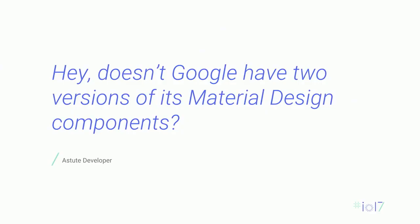You might be asking yourself, doesn't Google have multiple implementations of its UI library? It's true — we actually have more than two versions. We have one in Polymer and Web Components, one in Angular, Material Design Light, Material Components, and a few internal implementations. When we started Material Design three-plus years ago, the Web Components standards were very much still in flux. Today we have Web Components v1 shipping across Chrome, Opera, and Safari, and things are starting to settle down.